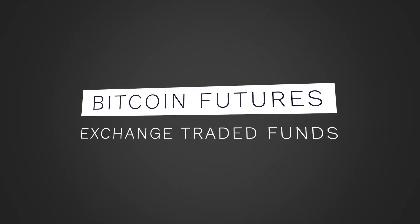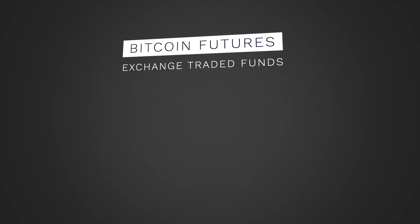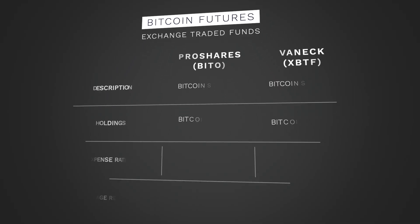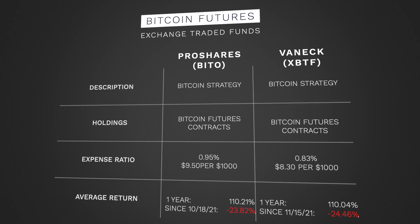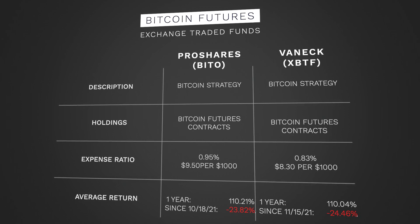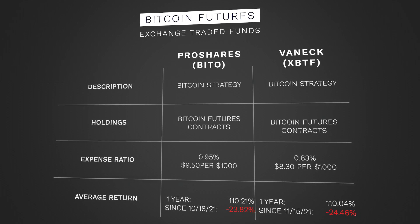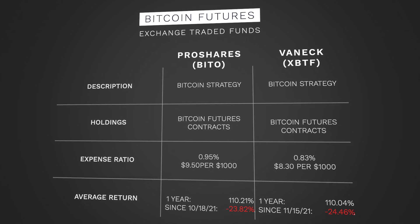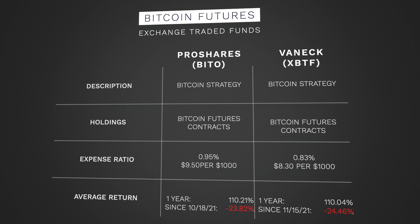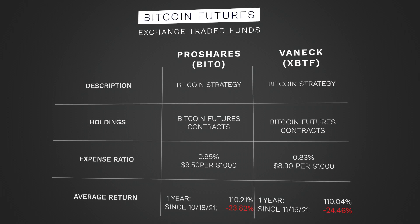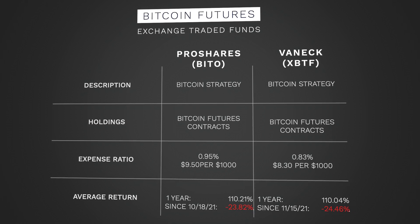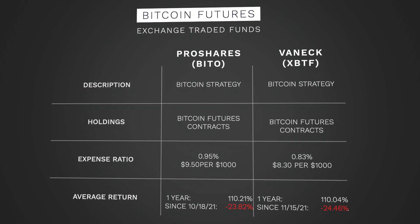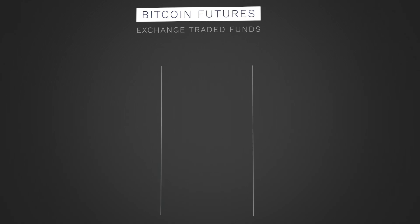A couple of Bitcoin ETFs listed here are ProShares Bitcoin Strategy and VanEck's Bitcoin Strategy ETFs. As you can see, since their launch in 2021 with Bitcoin prices going down, they are in the negative. However, the last year has reaped a return of 110% for each of those.